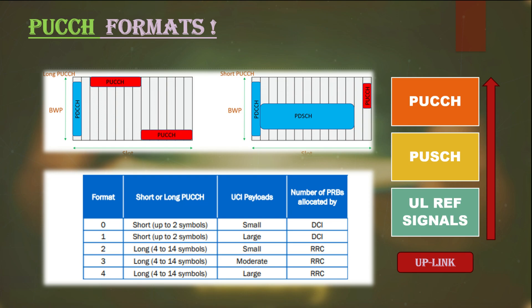Short PUCCH uses fewer resources from the PRB structure in terms of resource elements in the time and frequency domain. If the need is to serve many user devices whose data is to be multiplexed in the resource allocation, then long PUCCH is required, and for that, format 1, 3, or 4 can be used.